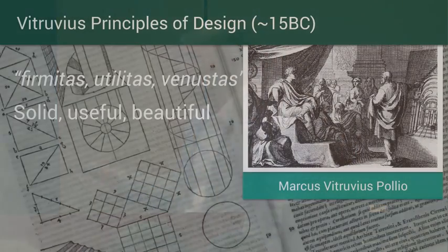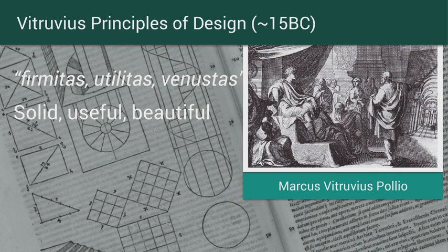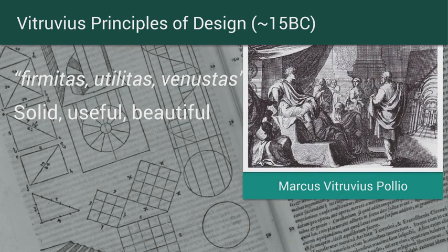It turns out these kinds of ideas have actually been explored a long time ago. This is something from Marcus Vitruvius Pollio — Vitruvius, an architect in the Roman era. What Vitruvius did was write a book called De Architectura, where he described some architectural principles for building Roman buildings. You might know Vitruvius from the Vitruvian Man — Da Vinci's Vitruvian Man was based on his principles. When describing how to build a building, it should be firmitas, utilitas, venustas.